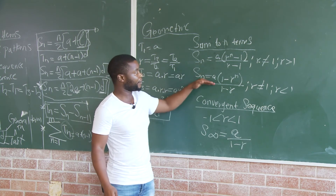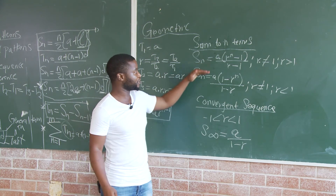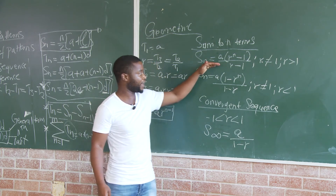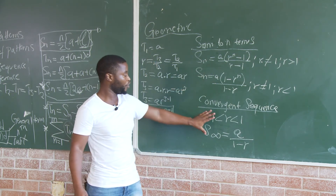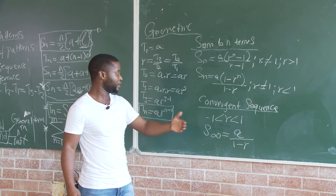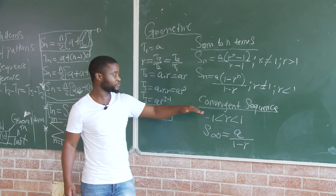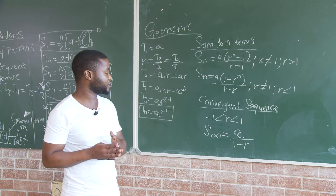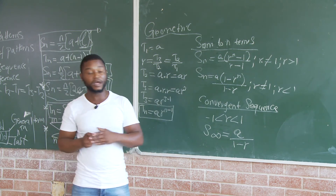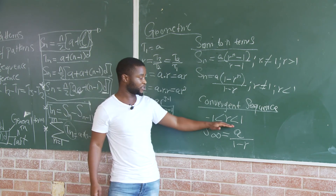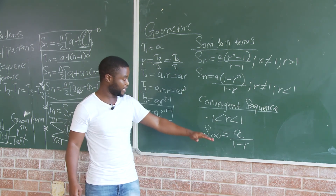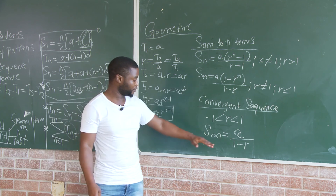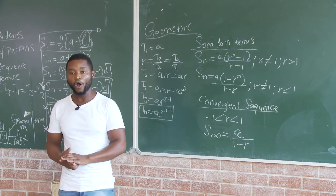It is examinable. You must be able to prove the formula for sum to infinity. It is very important that you know how to prove the formula, though we will prove it at a later stage because of time. It is very important that you know a convergent sequence applies to geometric sequences only — not arithmetic and not quadratic. For a convergent sequence, R is greater than negative 1 but less than 1, and it has a sum to infinity equal to A over 1 minus R. Thank you so much.